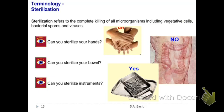You cannot sterilize your hands or gastrointestinal tract, but you can sterilize surgical instruments — in fact, you must sterilize them before use. When you go to a dental clinic, the first thing you should ask is whether they have an autoclave. If the dentist says they only have Clorox, do not go to that dentist anymore. Each dental clinic should have an autoclave.